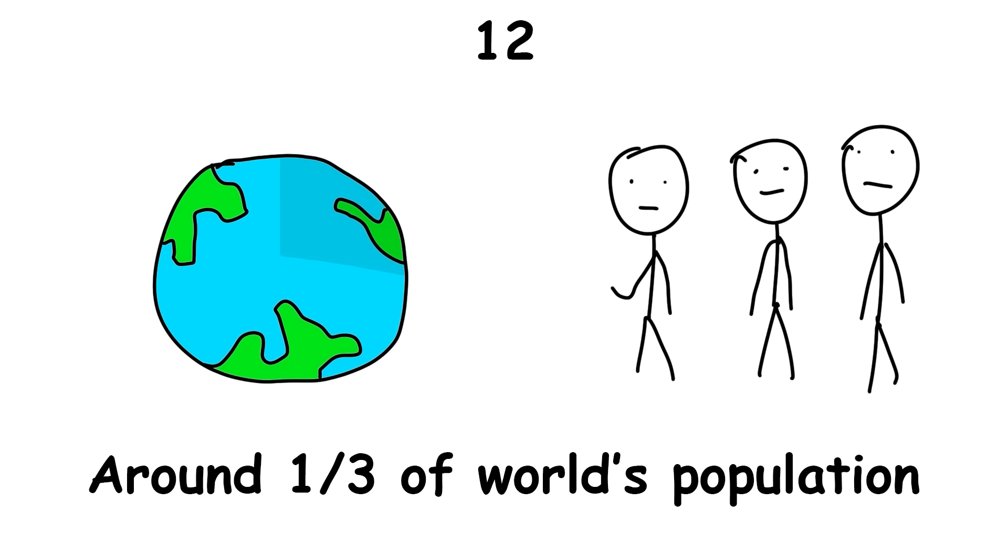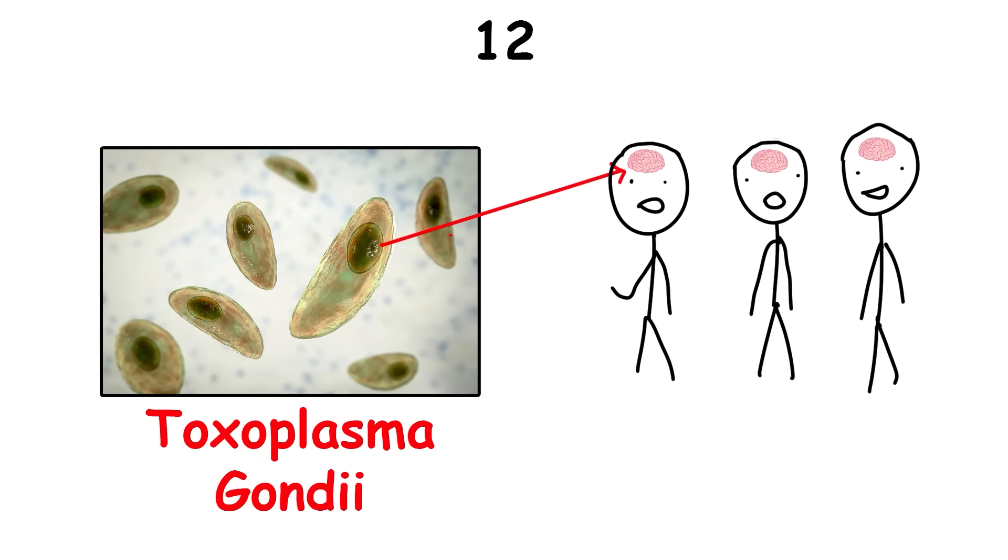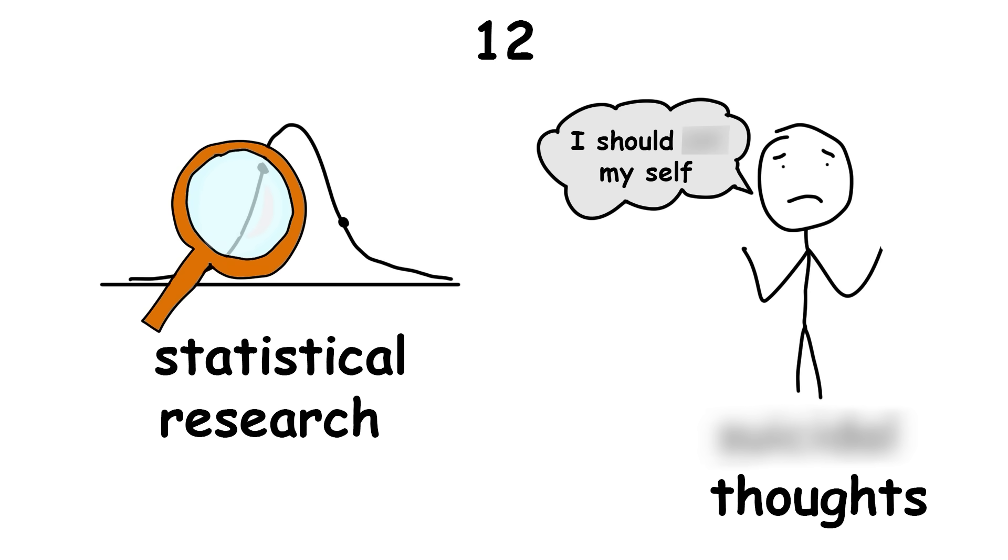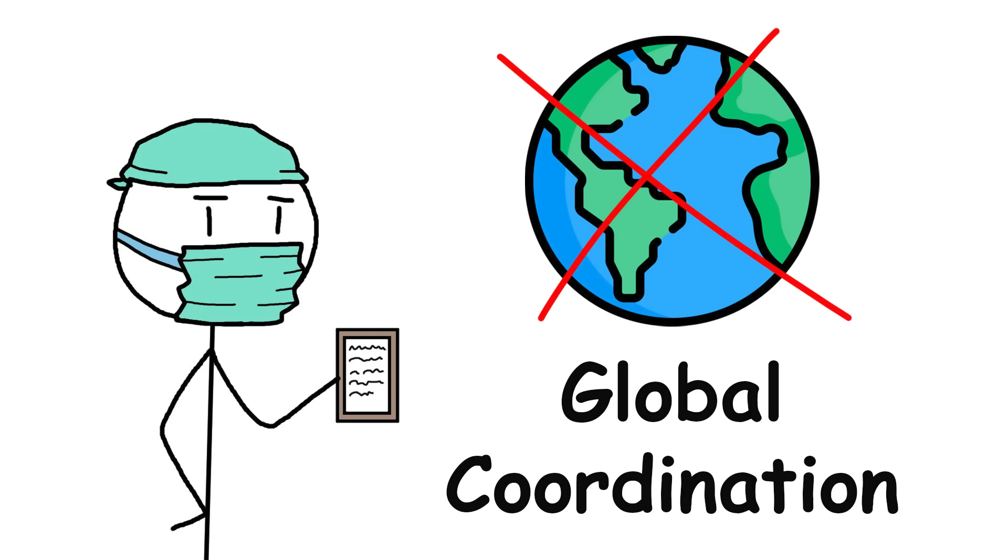Around one-third of the world's population is infected with the parasite Toxoplasma gondii in their brain, and for a long time it's been thought to have been a benign presence that didn't cause any trouble. But recent statistical research shows that it might have an impact on anger and self-harm attempts. To further research this, we'd need more global coordination, which is pretty difficult.